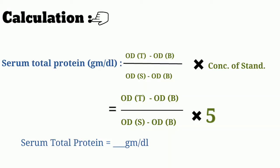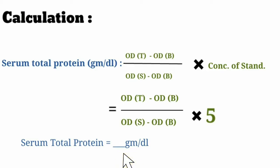Calculation for the test: serum total protein in grams per deciliter is calculated using the formula — OD of test minus OD of blank, divided by OD of standard minus OD of blank, multiplied by the concentration of the protein standard solution. We can also write this as: (OD test − OD blank) / (OD standard − OD blank) × 5, where 5 is the known concentration of the protein standard solution. The result is given in grams per deciliter.